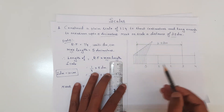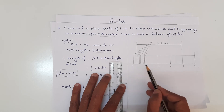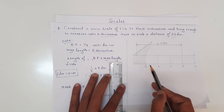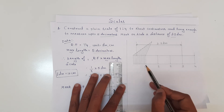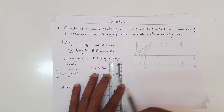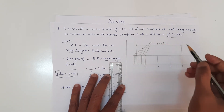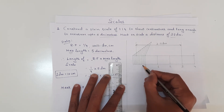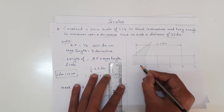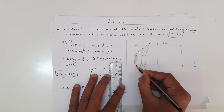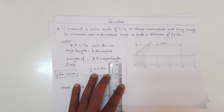From here to here it measures in terms of centimeters and here to here it gives in terms of decimeters. You can also mention here 2, 4, 6, and 8. I hope you got it. Thank you. Namaste.